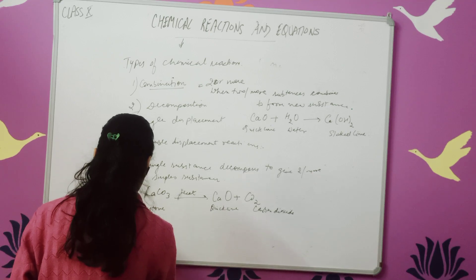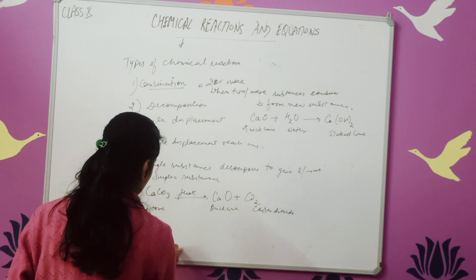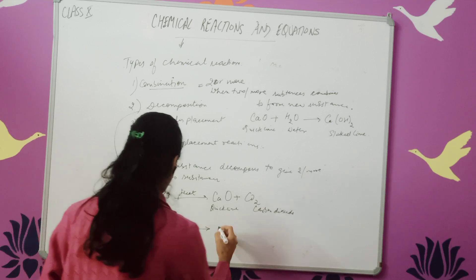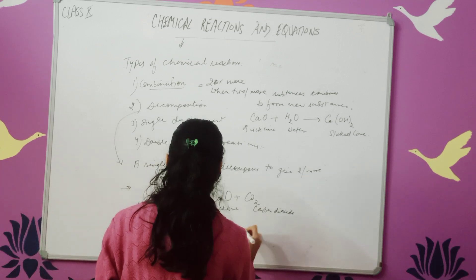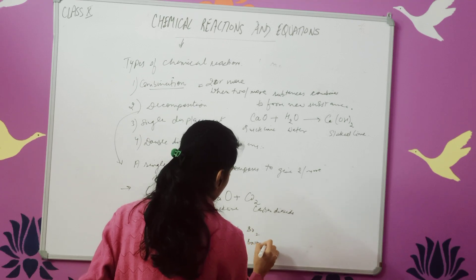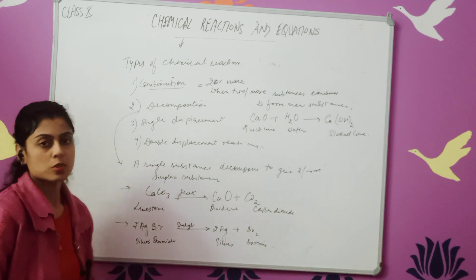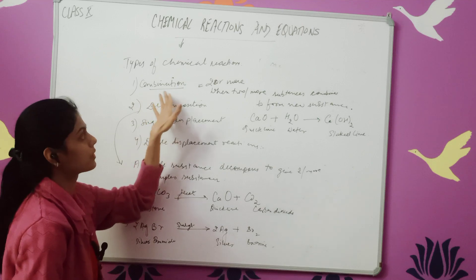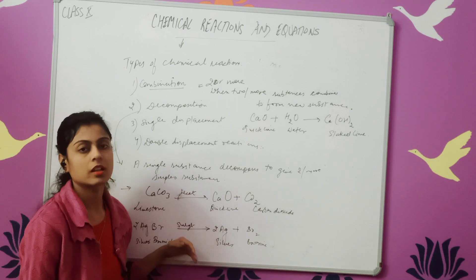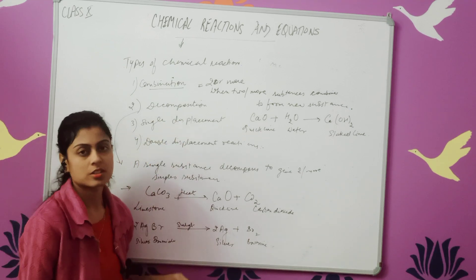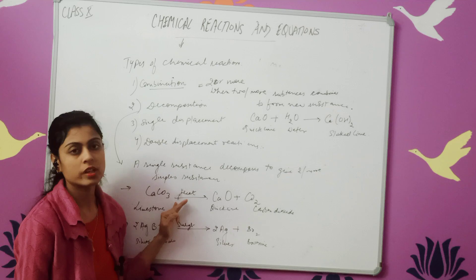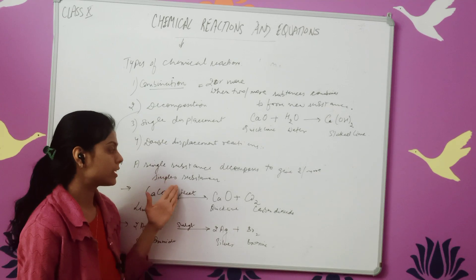Another example: 2AgBr — where Ag is silver and Br is bromide — when heated under sunlight gives 2Ag plus Br2, silver and bromine. So the first two types are: combination reaction, where two or more substances form a new substance, and decomposition reaction, where a single substance breaks into two or more substances.